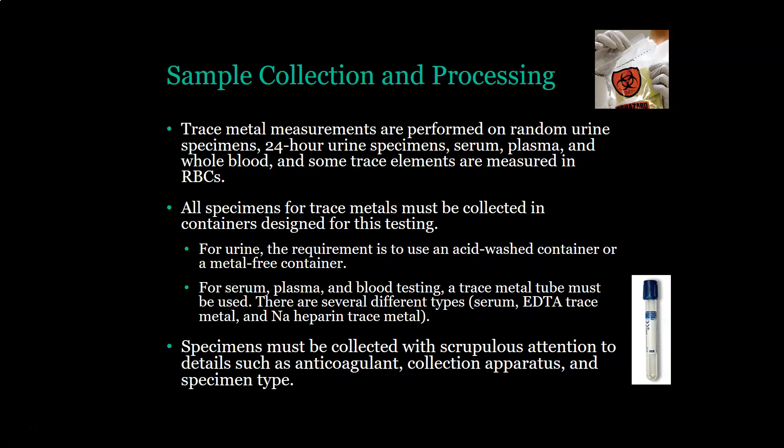For urine, the requirement is to use an acid-wash container or a metal-free container. For serum, plasma, and blood testing, a trace metal tube must be used. There are several different types: a serum tube, an EDTA trace metal, and a sodium heparin trace metal. The EDTA trace metal is a royal blue top and is not usually in your standard collection tube — it's typically set aside by the lab or must be requested specifically.